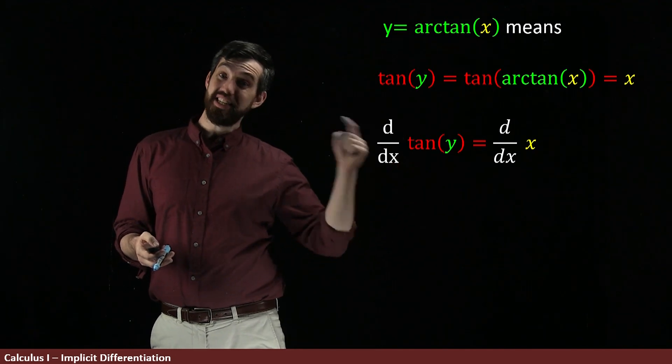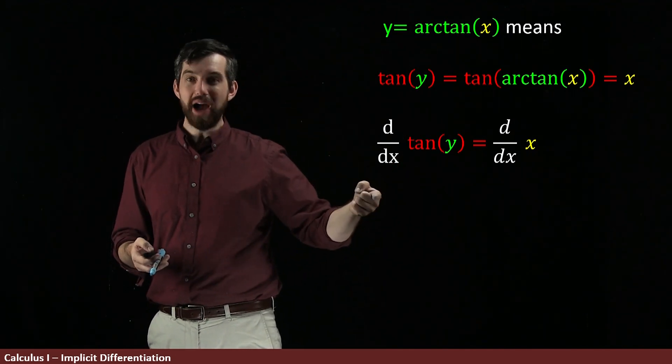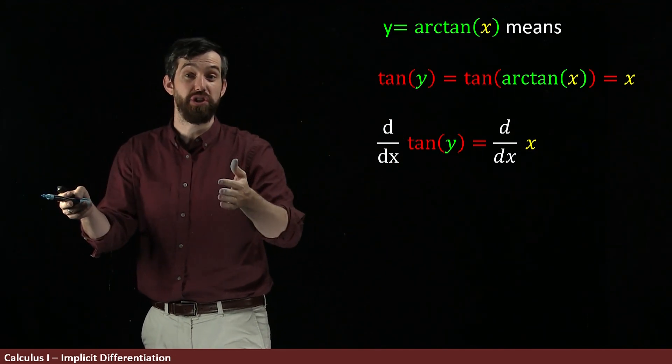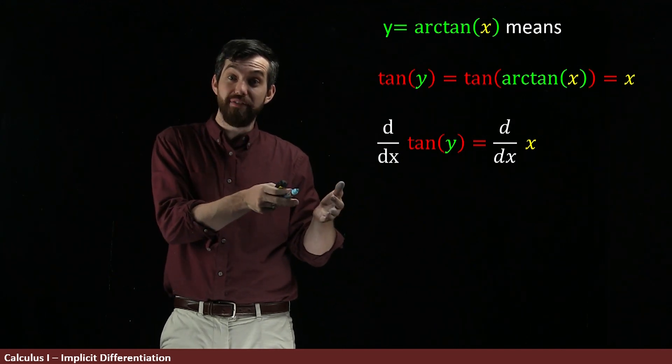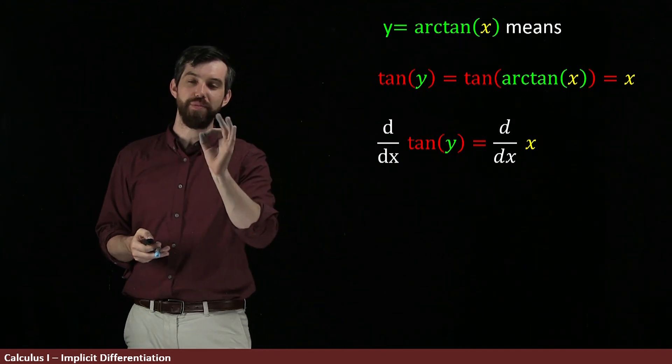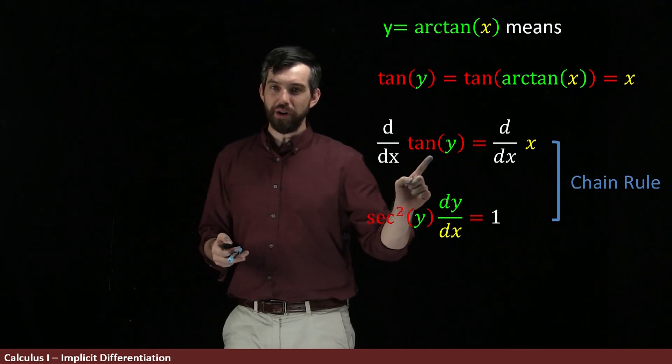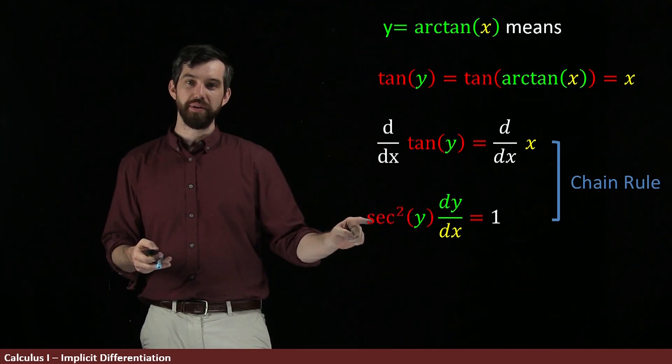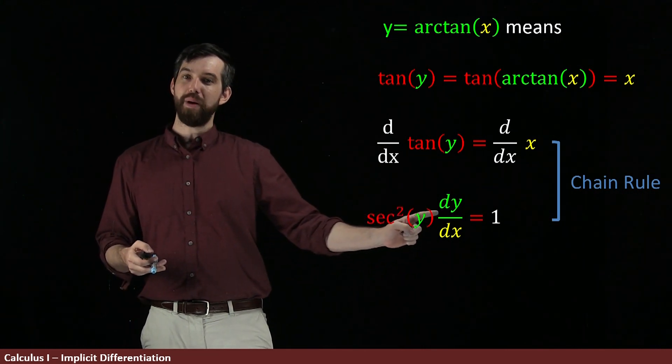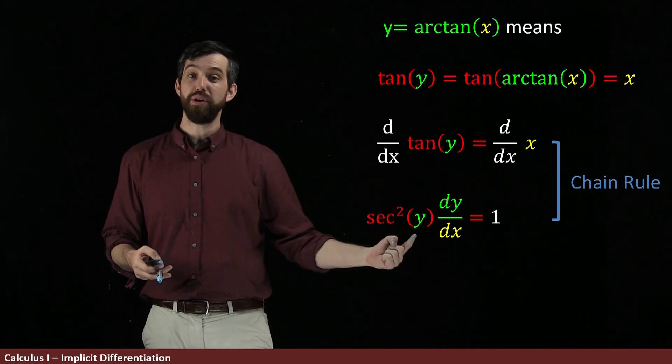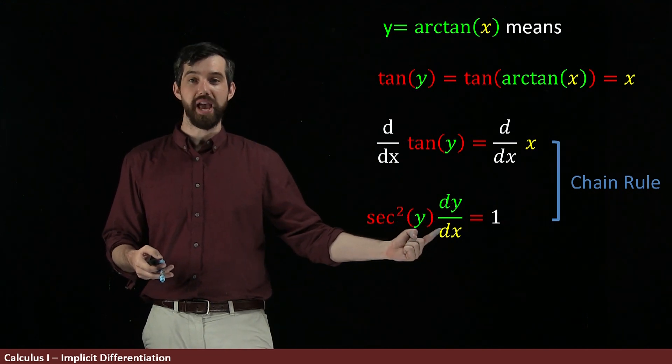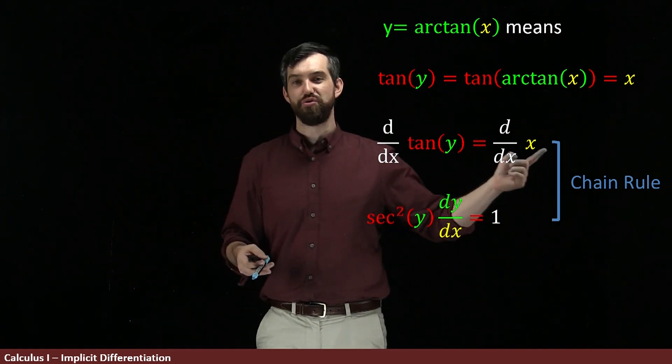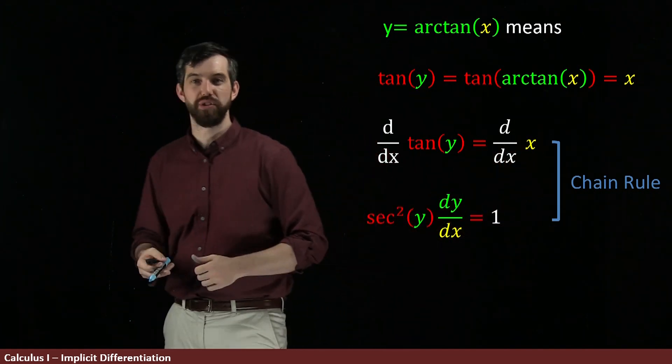This is a composition, indeed, tangent of y. If y is a function of x, this is an outside function tan and an inside function y of x. So I'm going to use the chain rule and what I get from that is that the derivative of tan is secant squared and then I'm going to multiply by the derivative of the inside function with my chain rule. And the derivative of the inside function is y, so it's dy dx. And on the right-hand side, the derivative with respect to x of x is just 1. Shocking.